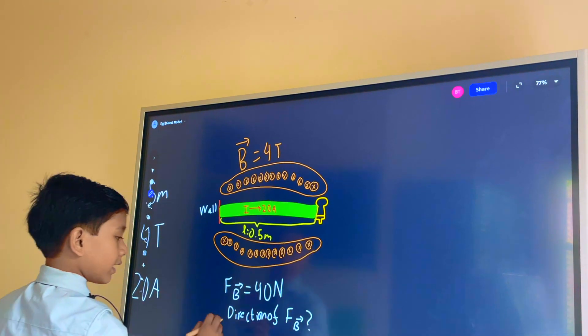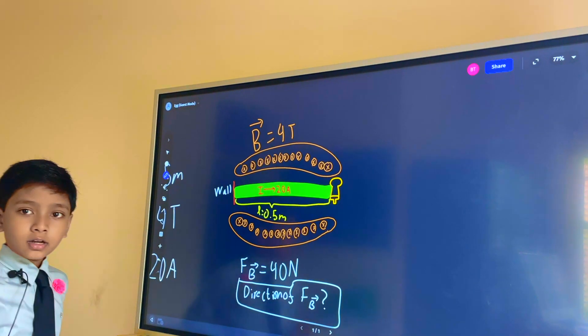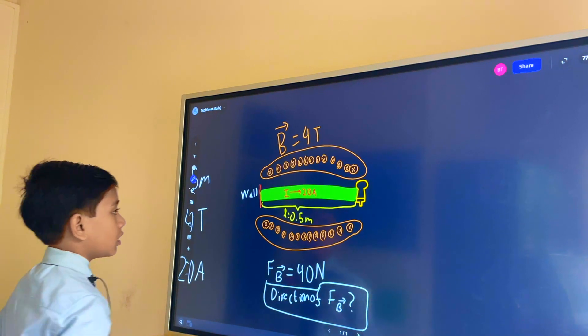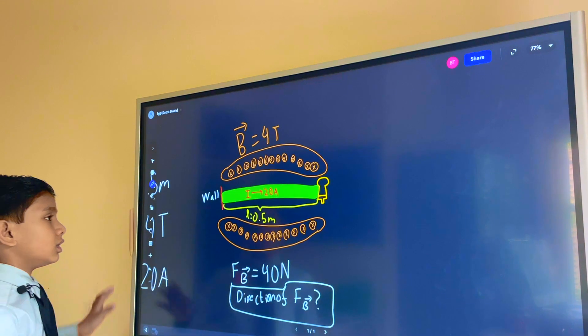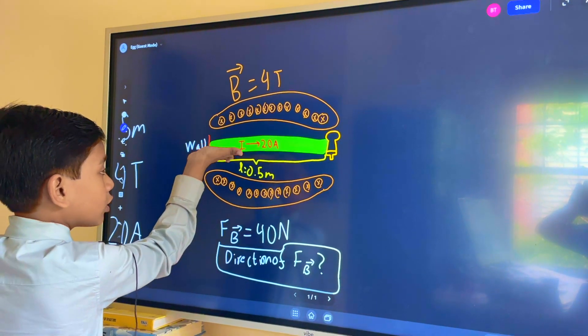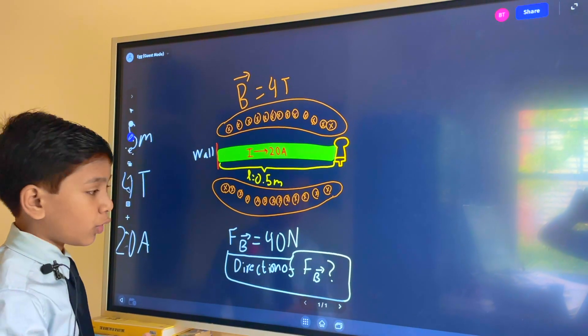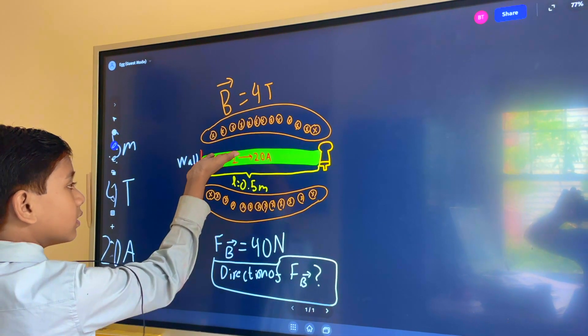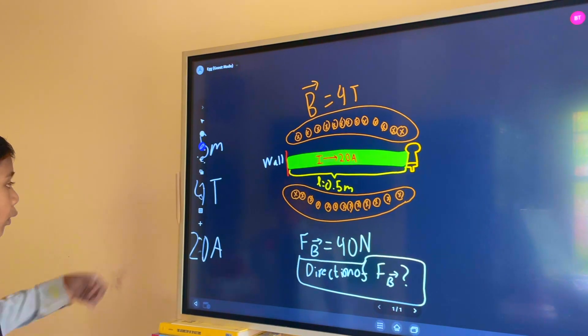So now the thing left to find is the direction of our force. All right so we can do this using a variation of the right hand rule. So let's put our thumb in the direction of the current. Can't poke the smart board because it'll fall over. But then we see that our fingers are going inside our board.